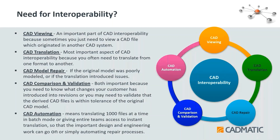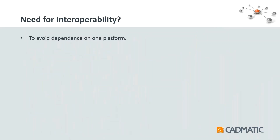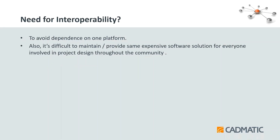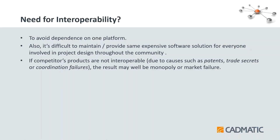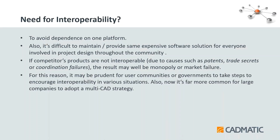Automation allows multiple conversions and repairs to be done at one time. There are further reasons why interoperability is required: to avoid dependency on one platform, since it is difficult to maintain and provide the same expensive software solution for everyone in a project. If competitive products are not interoperable — maybe due to patents, trade secrets, or coordination failure — this may result in monopoly and even market failure. For this reason, it may be prudent for a user community or government to take steps to encourage this concept.